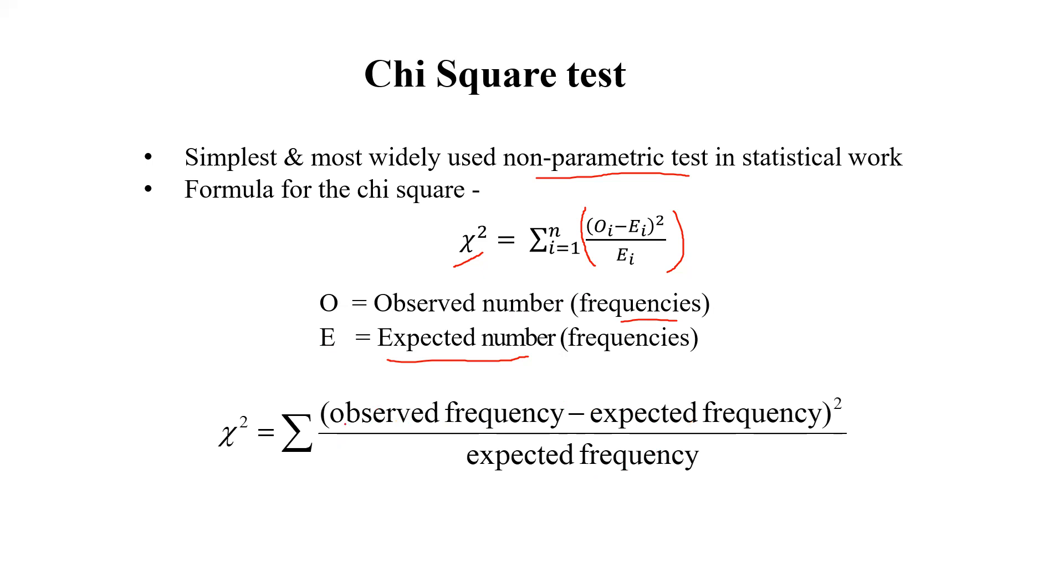This is the summation, this is the chi-square. This formula we can interpret like this. Same way, Oi means observed frequency, Ei means expected frequency divided by expected frequency. This is about simple application and concept of the chi-square.